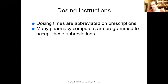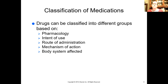Dosing times are abbreviated on prescriptions and many computers are programmed to accept these abbreviations. AM comes out as 'in the morning,' PM comes out as 'in the evening.' Drugs come in different classes, and classifications can be based on pharmacology, what they're intended to do, route of administration, mechanism of action, or the body system affected.